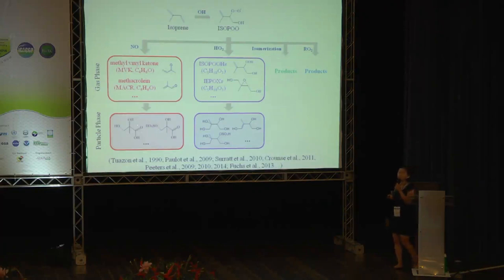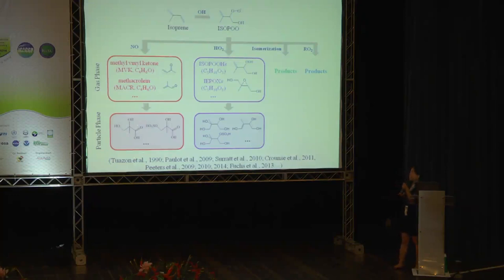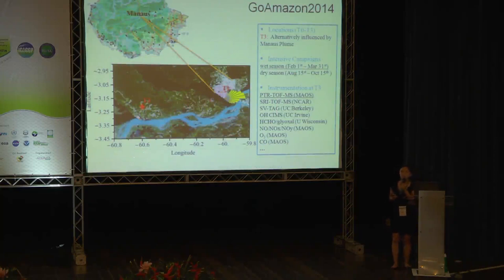With intensified human activity over Amazonia, an important question is how will human activity change the relative importance of these pathways and by how much? And also, what other aspects could human activity affect in isoprene chemistry? The GoAmazon campaign provides a very good opportunity to investigate these questions in this natural laboratory.